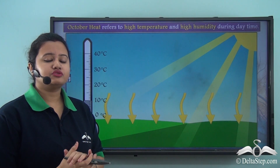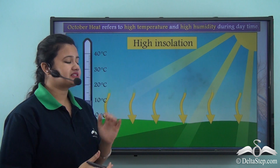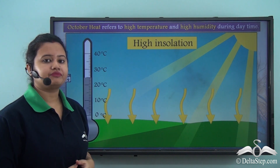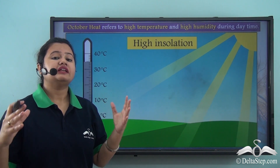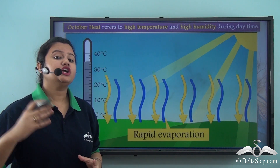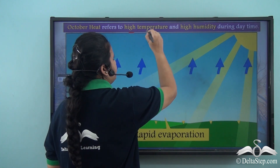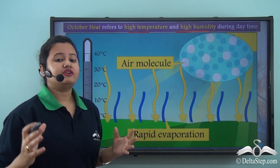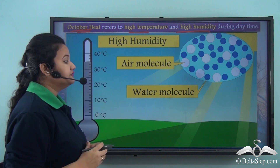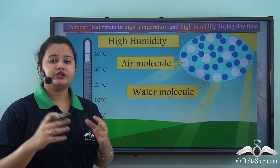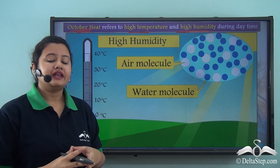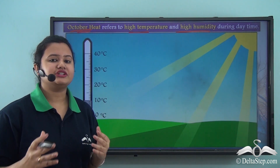The withdrawal of monsoon winds results in clear skies, which raises the daytime temperature due to rapid insolation. Due to high temperature, the rate of evaporation rises and the level of humidity shoots up. This high temperature and high humidity makes the weather oppressive during daytime, and this is referred to as October heat — so named because such climatic conditions prevail during the month of October.